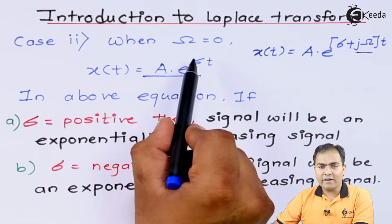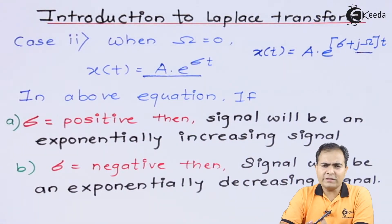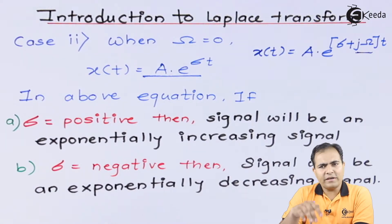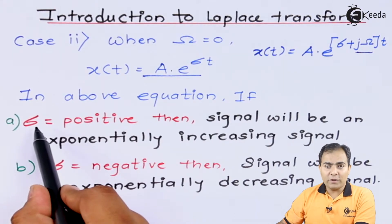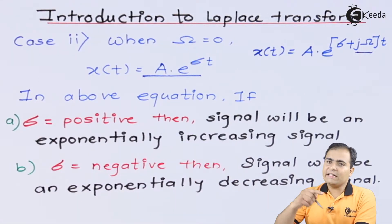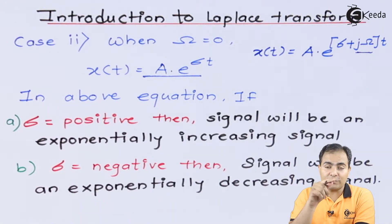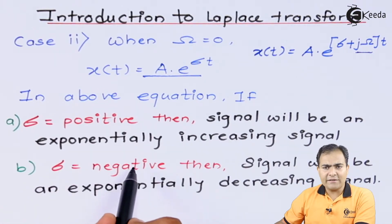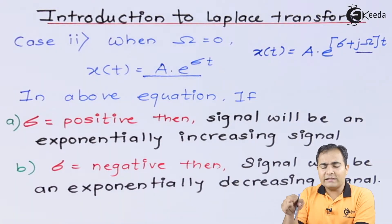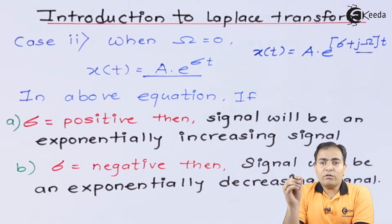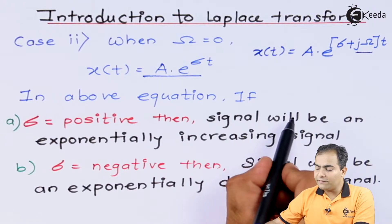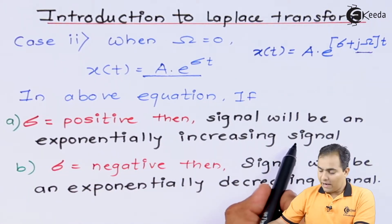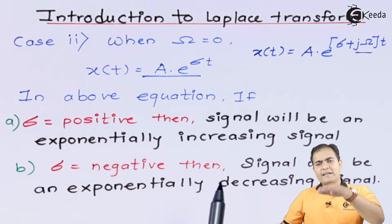From this equation, sigma can have two different values — positive or negative. If sigma is positive or negative, the exponential signal may increase or decrease. If sigma is positive, the signal will be exponentially increasing — at T equals infinity, the amplitude is also infinite. If sigma is negative, the graph will start to decrease — a decaying exponential. For T equals infinity, the exponential will produce a 0 value. So for positive sigma, the signal exponentially increases, and for negative sigma, it exponentially decreases with respect to time.